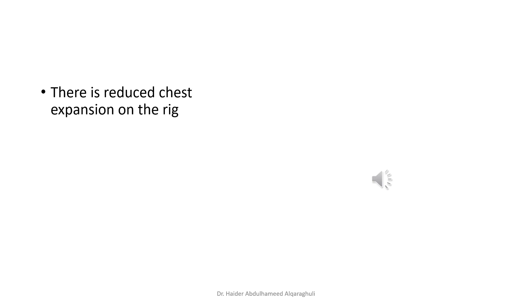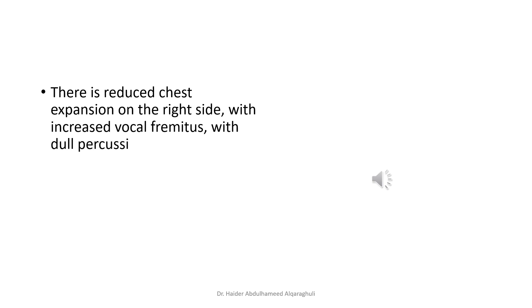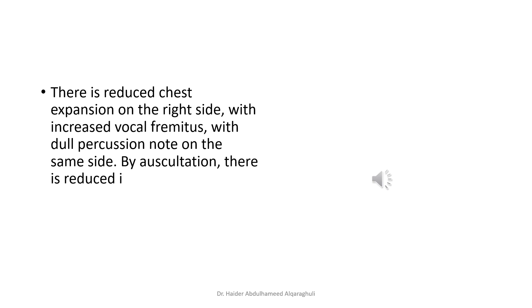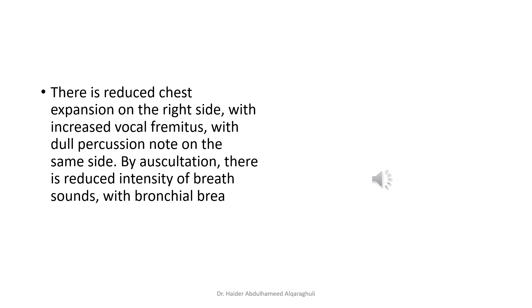There is reduced chest expansion on the right side with increased vocal fremitus and a dull percussion note on the same side. By auscultation, there is reduced intensity of breath sounds with bronchial breath sounds. In addition, there are fine inspiratory crackles with egophony and whispering pectoriloquy.